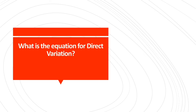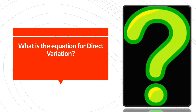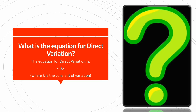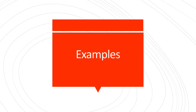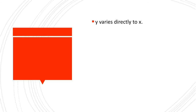Now, what is the equation for direct variation? The equation for direct variation is y equals kx, where k is the constant of variation. Here are examples of direct variation. First, y varies directly to x. It is written as y equals kx.